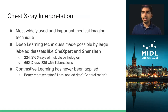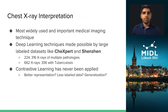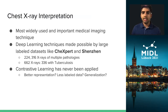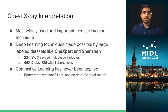The task we're wanting to focus on is chest x-ray interpretation, which is the most widely used and important medical imaging technique. Deep learning techniques have been made possible recently by the release of large labeled datasets like Chexpert and Shenzhen, which were used in this study. Chexpert contains a little over 200,000 x-rays with multiple pathologies, while Shenzhen is a smaller dataset with around 662 x-rays — 336 have tuberculosis and the rest are healthy.